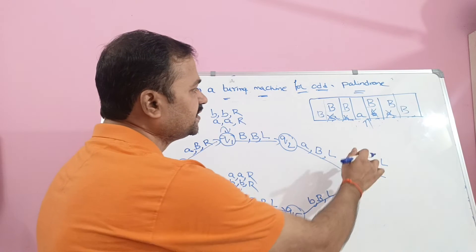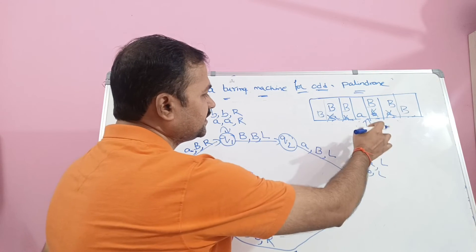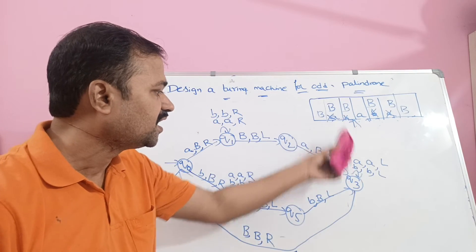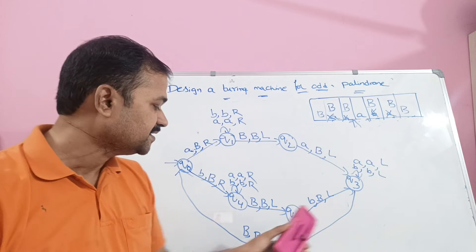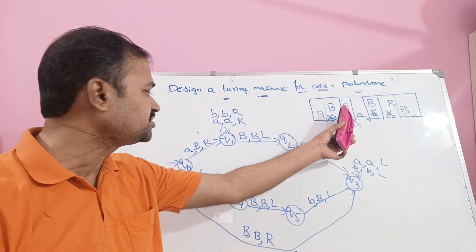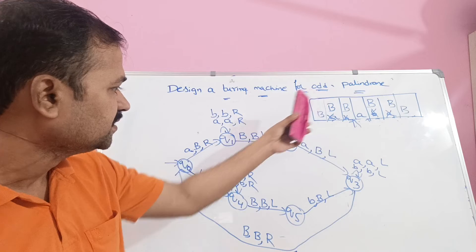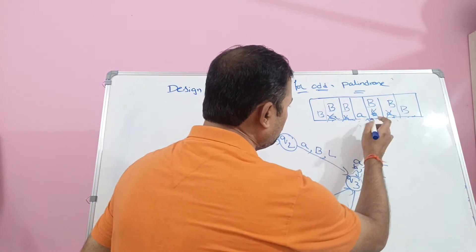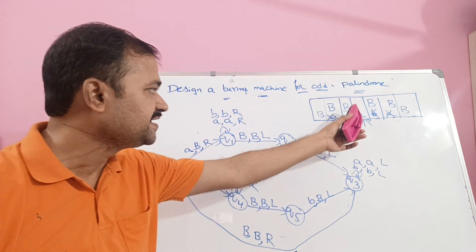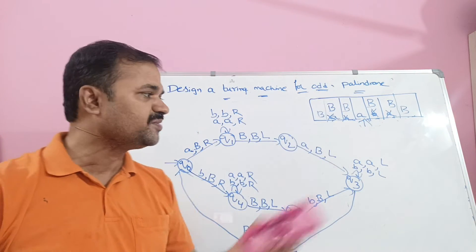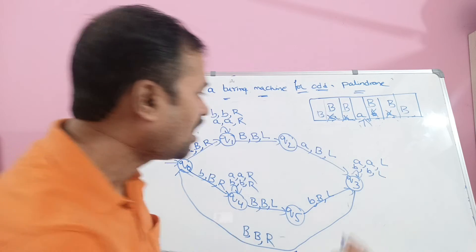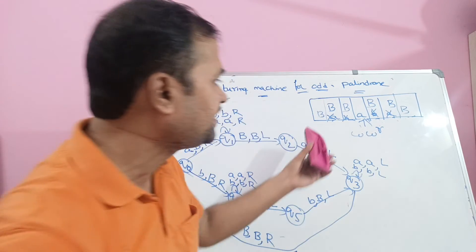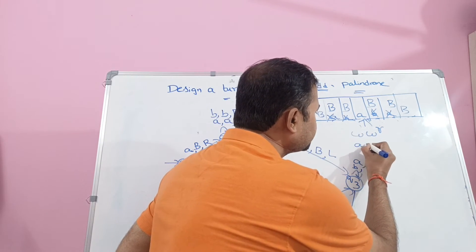We are now at Q3 state. If we apply A on Q3, don't change A but move the head left. If we read B on Q3, don't change B but move the head one position to the right. This is because our string is an example of W·W^R (a palindrome): W followed by its reverse W^R.